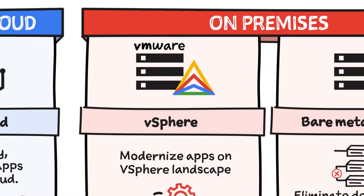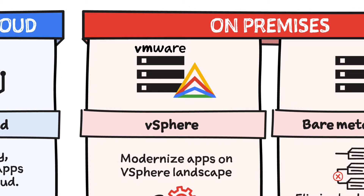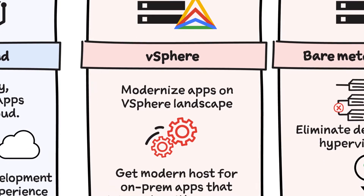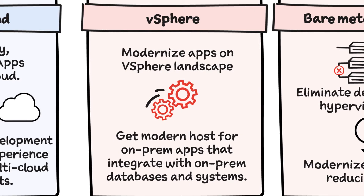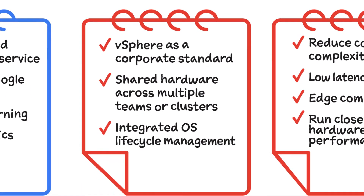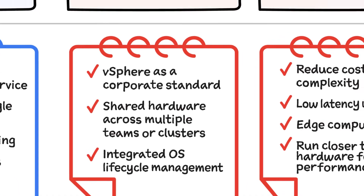The second option is if you're using VMware vSphere in your own on-premise environment, then you can choose to run them on an Anthos cluster right there, modernizing your apps in the vSphere landscape. This is a good option if vSphere is a corporate standard for you, or if you have shared hardware across multiple teams or clusters, with integrated operating system lifecycle management.